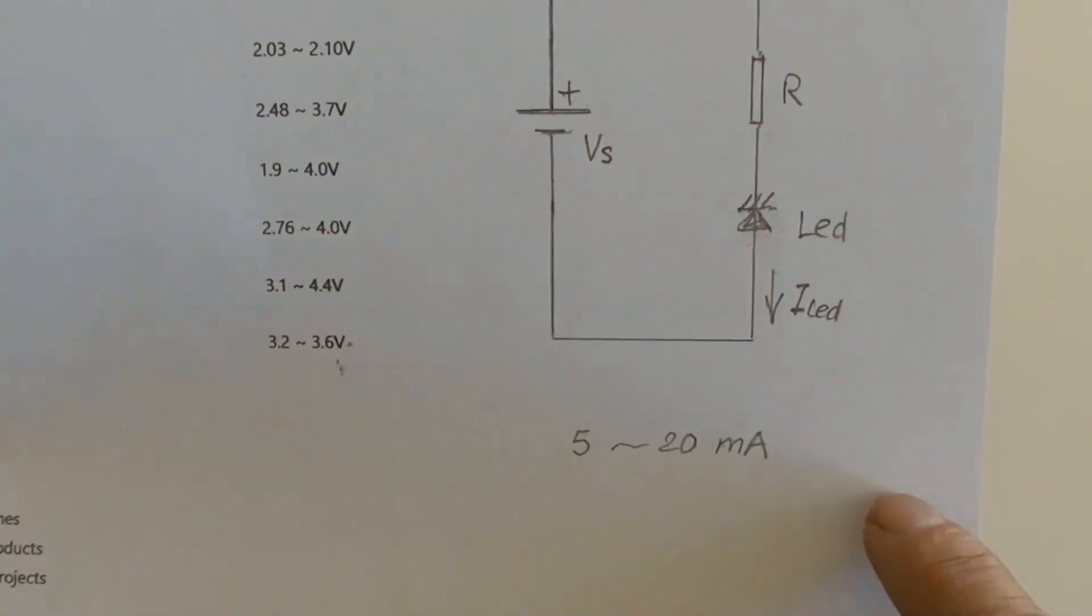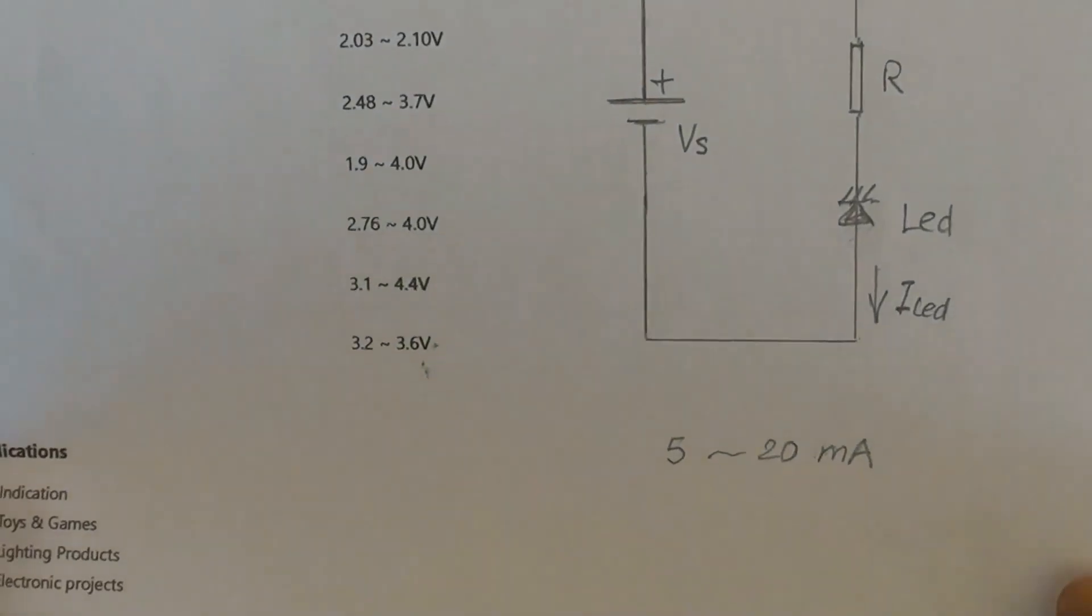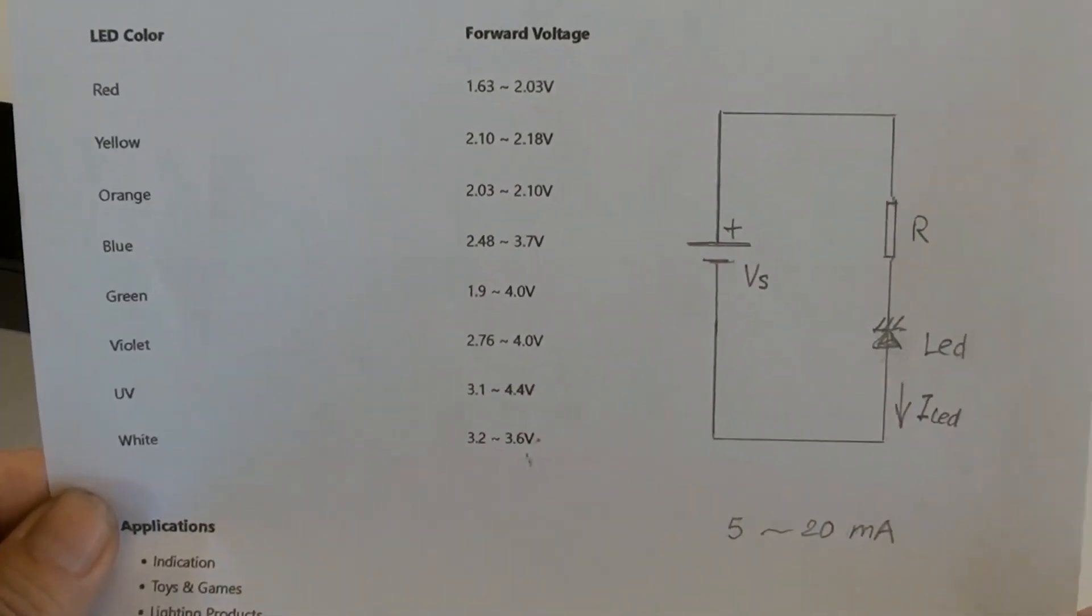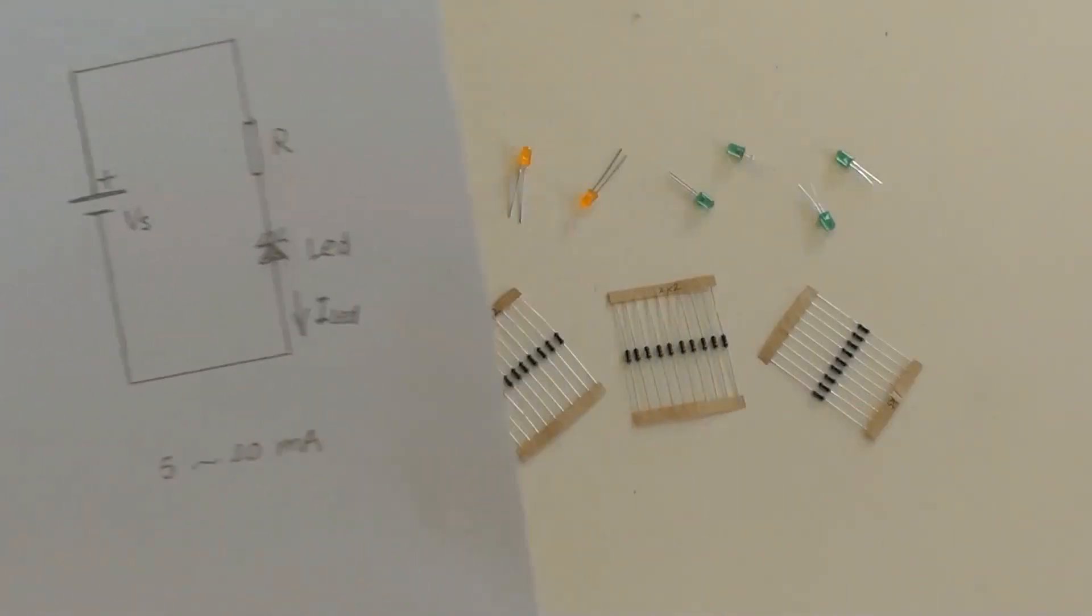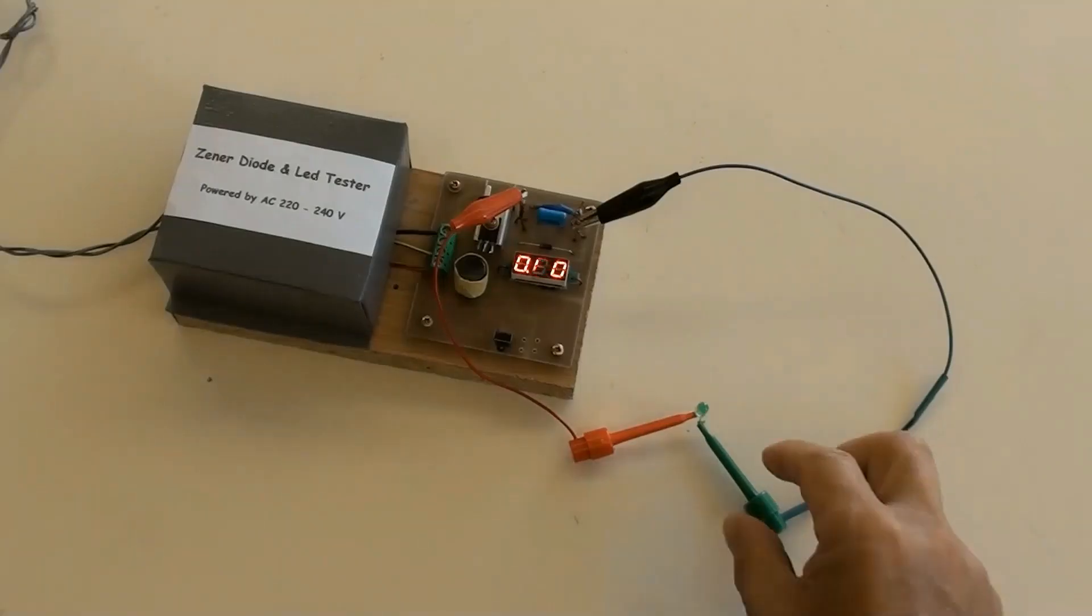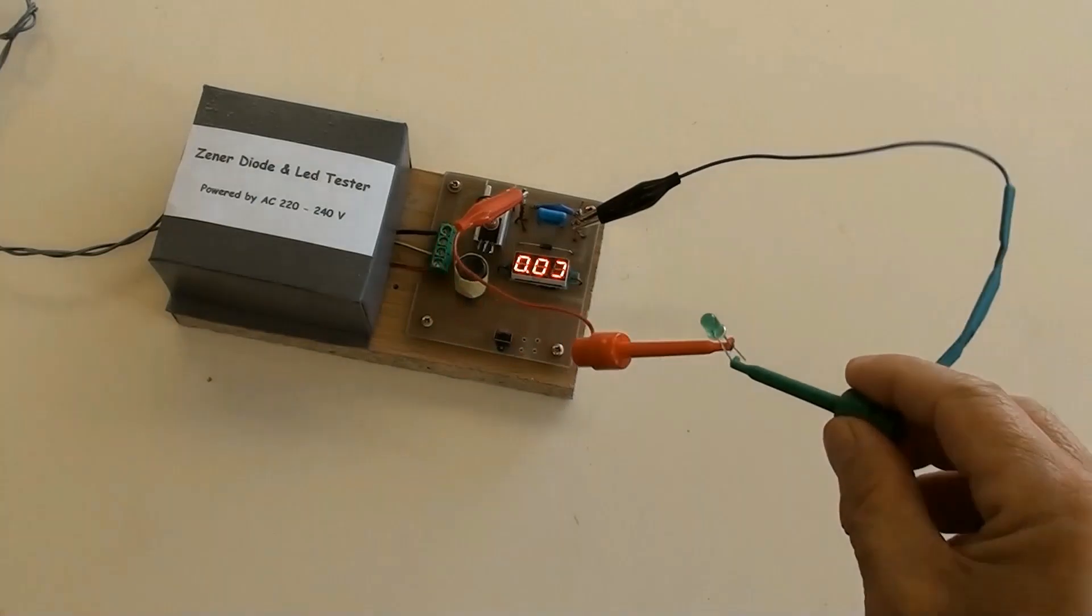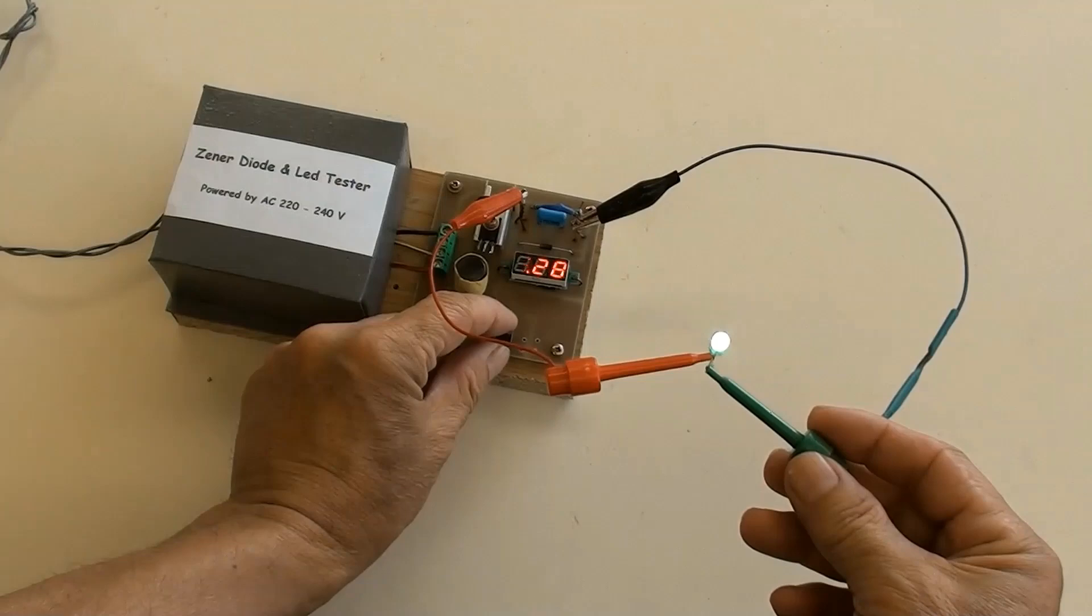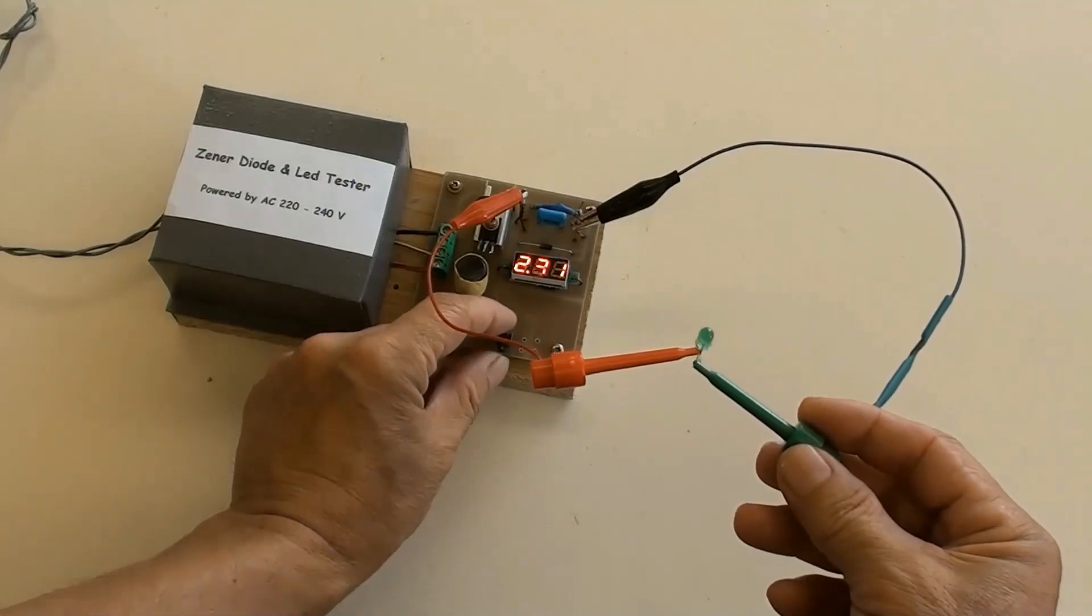A range of 5 to 20 milliamperes is normally this type of LED working current. Now using an LED tester to test this green LED. Its voltage value is 2.5 volt.